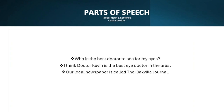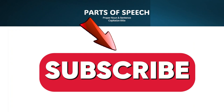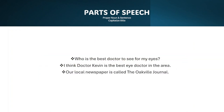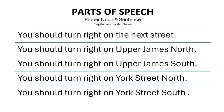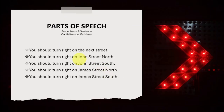Who is the best doctor to see for my eyes? Here we're talking about the title. I think Dr. Kevin is the best eye doctor in the area. Our local newspaper is called the Oakville Journal. Here I was talking about the street name — those are the street names in Canada, in Ontario.